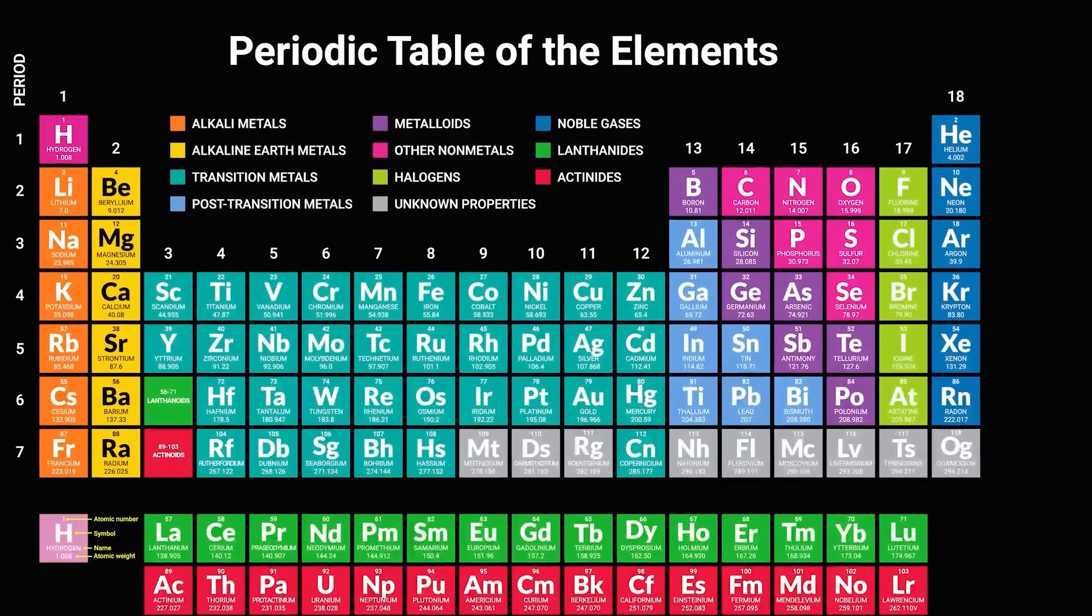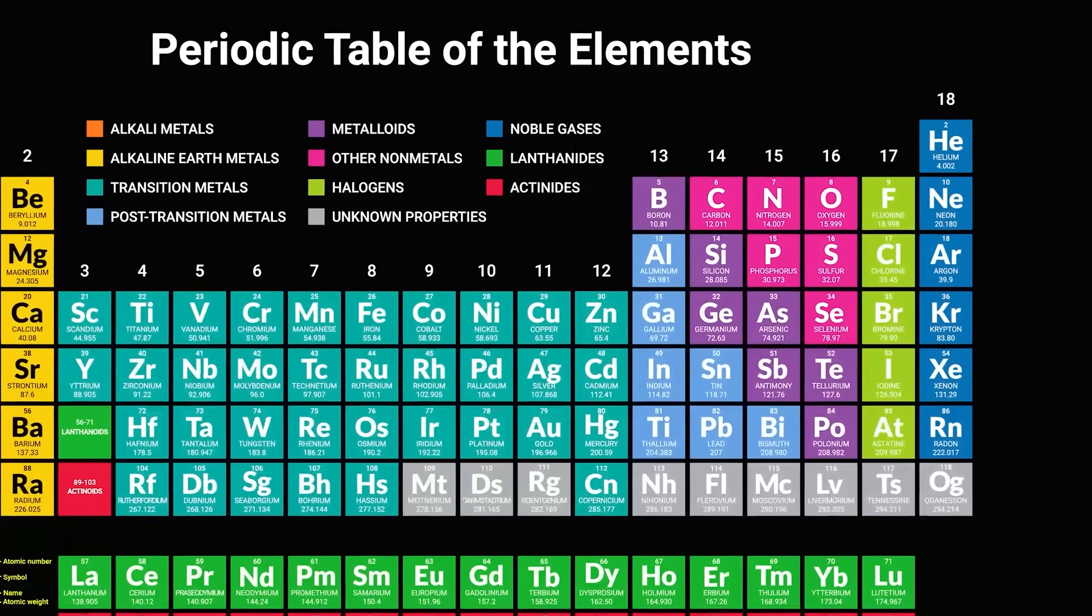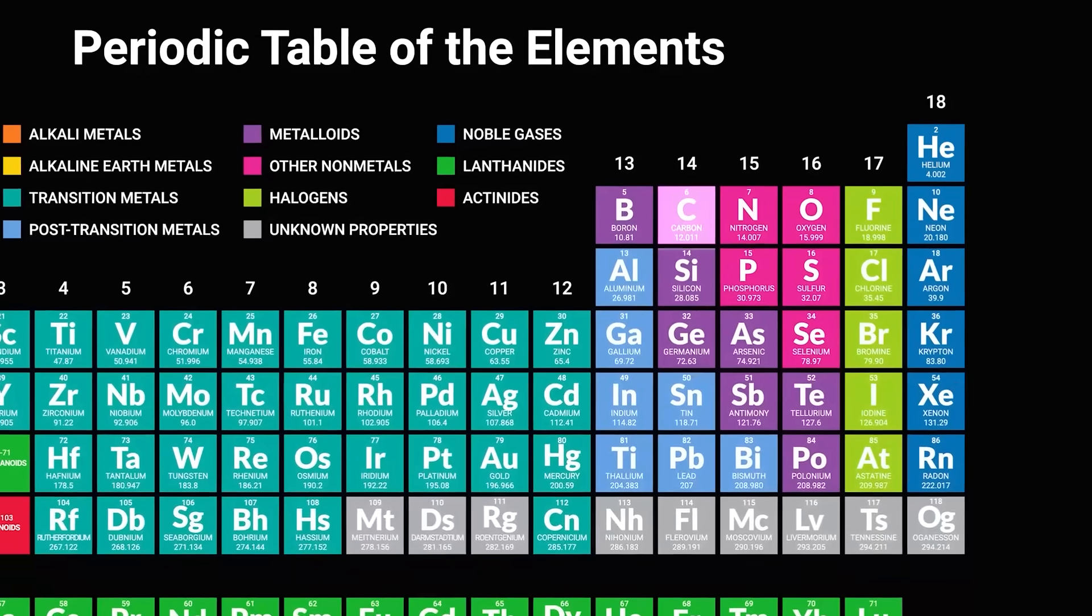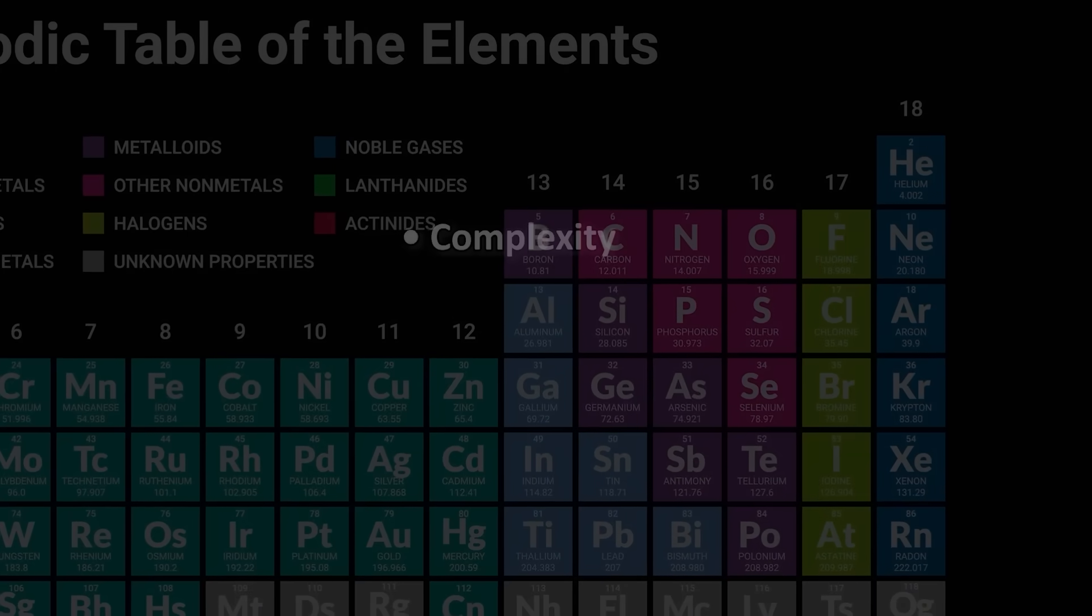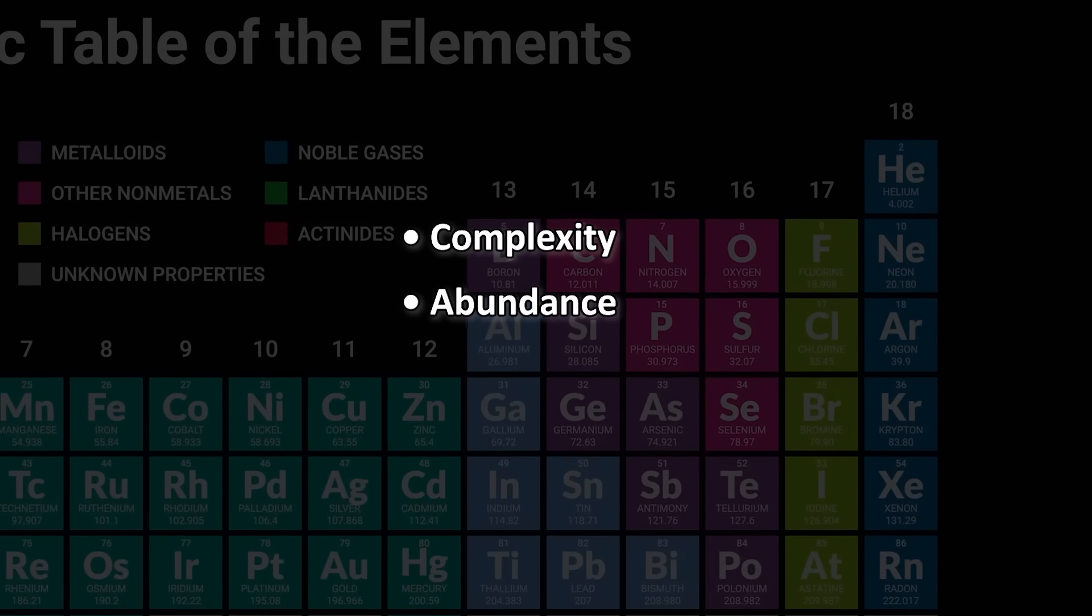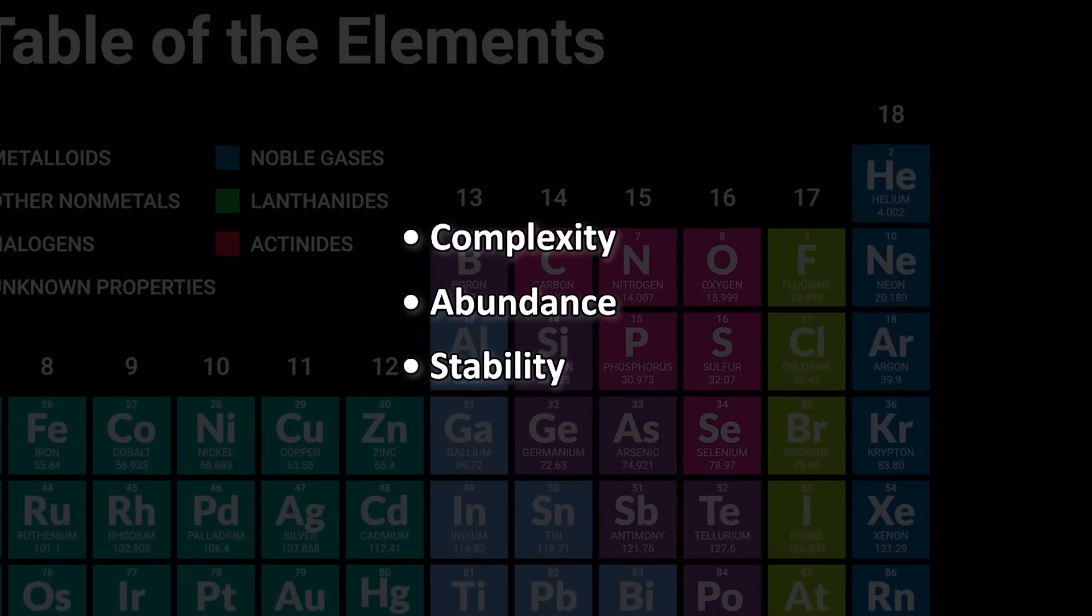There are 94 naturally occurring elements on the periodic table. Why is everything based on carbon and not something else when the choices are so many? The answer boils down to three things. Complexity, abundance, and stability.